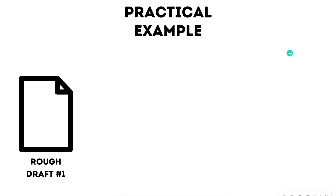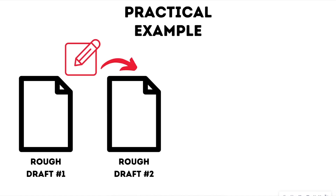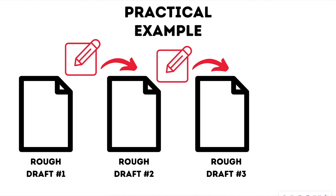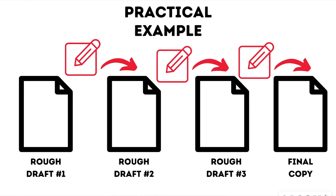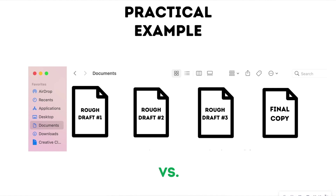Let's talk about version control with a practical example. Let's say you're creating a rough draft for your English class. You create the first rough draft, send it to the instructor, they make edits, and then you incorporate a second rough draft. After that second rough draft, they make more edits, and then you create a third rough draft. You get even more feedback and edits, and then you finally get to your final copy. This may look like your interface where you have a document with all of your versions of the paper, from your first rough draft all the way to the final copy.